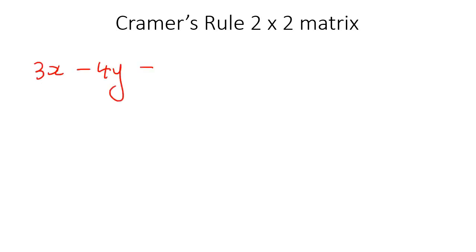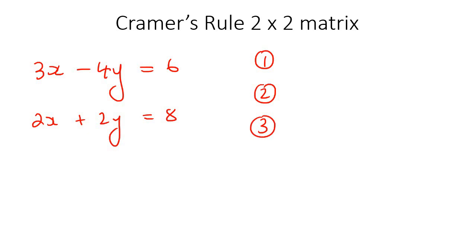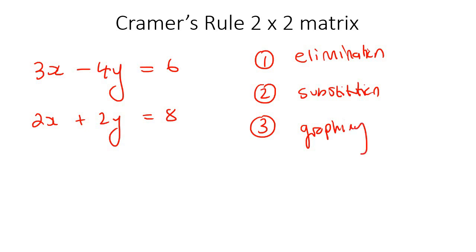The first thing I want to do is explain why we need to use Cramer's Rule. Remember back when we became really good at solving two-variable systems? We had things like 3x minus 4y equals 6, and 2x plus 2y equals 8, for example. We had three main methods we learned how to solve: elimination, substitution, and graphing. Now we're just going to add a fourth one, which uses a matrix method — and that's Cramer's Rule.